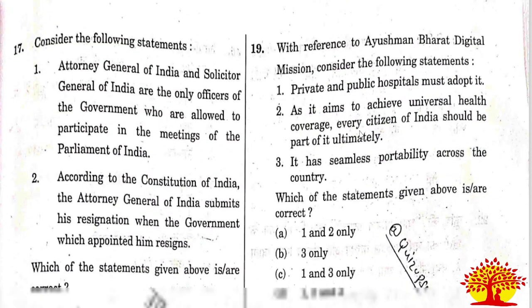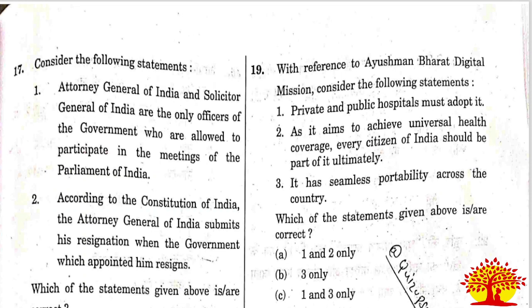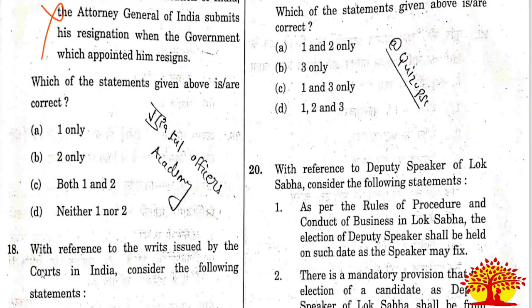Seventeenth question on the Attorney General and Solicitor General of India: Statement 1 - they are the only officers of the government allowed to participate in meetings of the Parliament of India - this is wrong. Statement 2 - according to the Constitution, the Attorney General submits resignation when the government that appointed him resigns - this is also wrong. Conventionally, he resigns when the Council of Ministers resigns, as he is appointed on the advice of the Council. Option D, neither 1 nor 2, is the right answer.